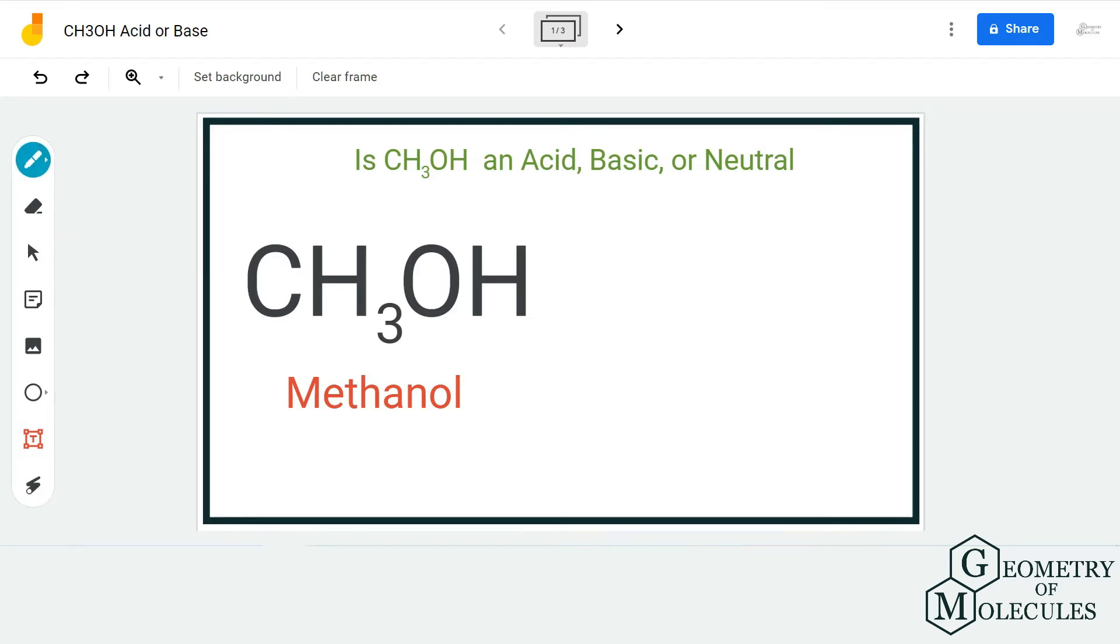it is considered amphoteric. Amphoteric is a term used to describe a compound that has properties of both acid and base. Methanol has the chemical formula CH3OH and consists of one methyl group and one hydroxyl group.